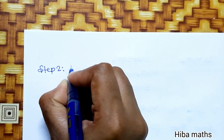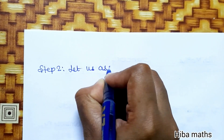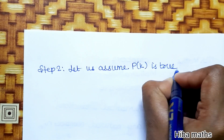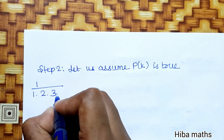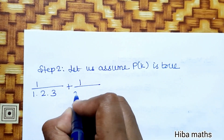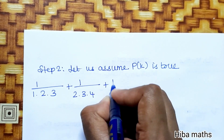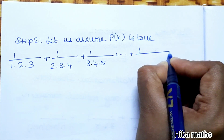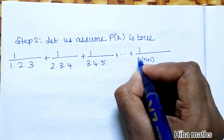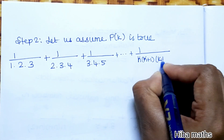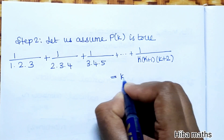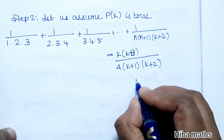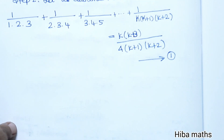Step 2: Assume P(k) is true. The statement becomes: 1/(1·2·3) + 1/(2·3·4) + 1/(3·4·5) + ... + 1/(k·(k+1)·(k+2)) = k(k+3) / [4·(k+1)·(k+2)]. This is our first result, which we will use in the next step.